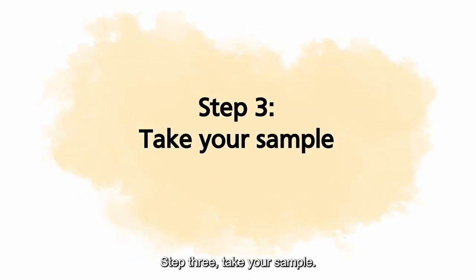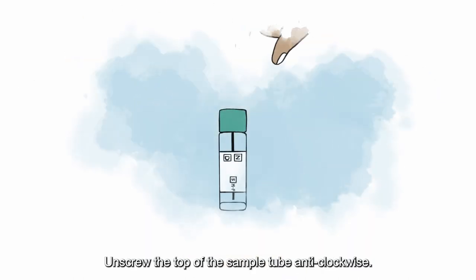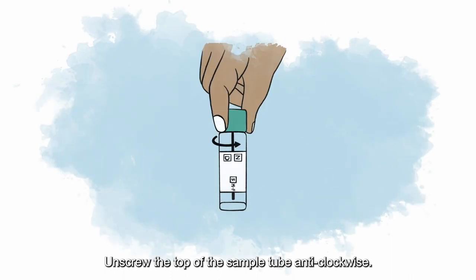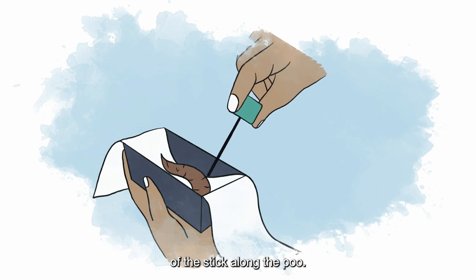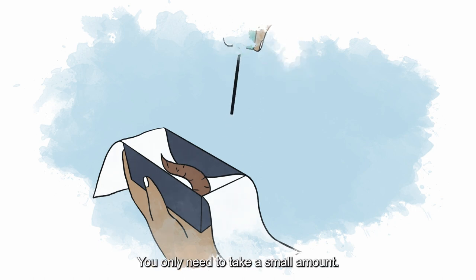Step 3: Take your sample. Unscrew the top of the sample tube anti-clockwise. Remove the stick and scrape the end of the stick along the poo. You only need to take a small amount.